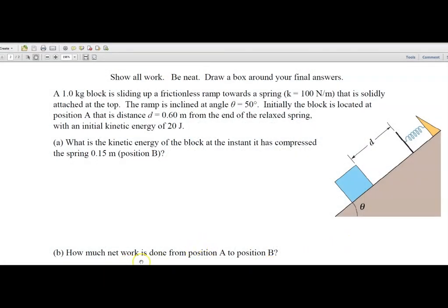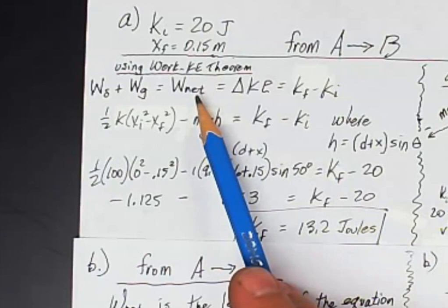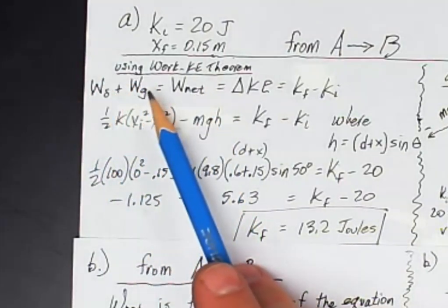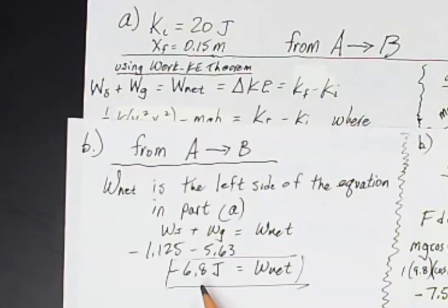Part B, how much net work is done as the block moves from position A to position B, where the spring is compressed 15 centimeters? So we really have already found the answers to this question. We just have to be able to identify it in our equation up above. So the net work is the sum of the spring and the gravitational work. In other words, it's the left side of the equation. So it's the sum of these two numbers. So that is negative 6.8 joules. The negative is very important. That means energy is being taken away from the block. Both the spring and the gravitational force are both doing negative work because their force is down the ramp while the displacement of the block is up the ramp. They both act to slow the block down. That's negative work.